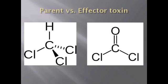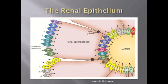Phosgene is largely responsible for hepatotoxicity and nephrotoxicity. The renal epithelium is a group of endothelial cells that make up the cell lining of tubules in the kidney. Upon distribution, the primary target of chloroform in the kidney was the epithelial cells of proximal tubules.